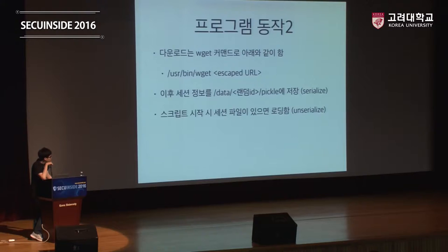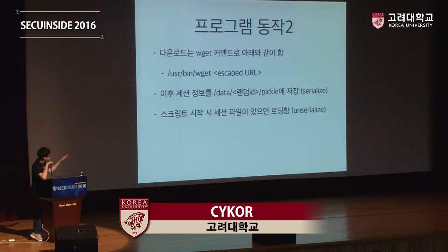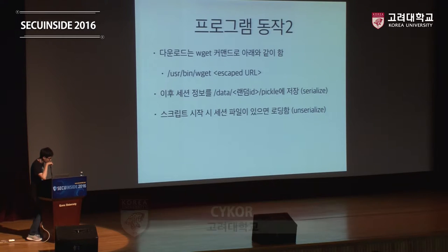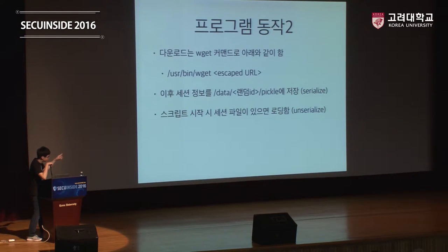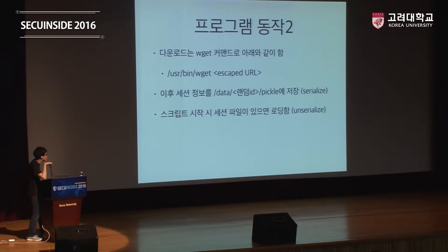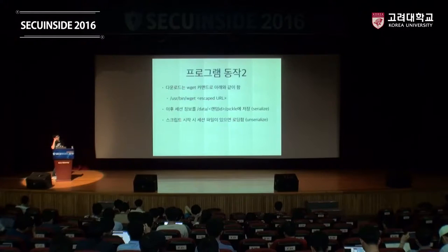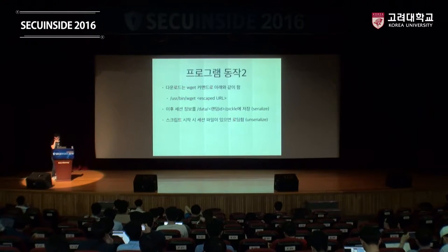다운로드는 wget에서 커맨드 인젝션 안 되게 escape을 한 다음에 URL을 넣었죠. 이후에 세션 정보를 그 데이터의 랜덤 아이디에 PHP의 shutdown handler에서 serialize를 해가지고 저장을 했었고, 이게 없으면 나중에 저장하도록 했어요. 그러니까 shutdown할 때 저거 부분에서 저장하게 했고, 스크립트 시작할 때 만약 그 저장된 데이터가 있다면 unserialize를 해서 로딩을 하게 했어요. unserialize할 때 클래스 찾는 게 귀찮으니까 그냥 진짜 간단하게 unserialize하면 GET의 cmd로 준 명령을 그냥 바로 실행해 주겠습니다, 이런 식으로 한 줄짜리 클래스를 넣었고요.